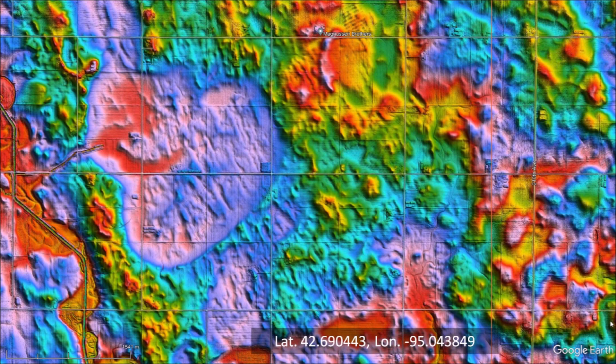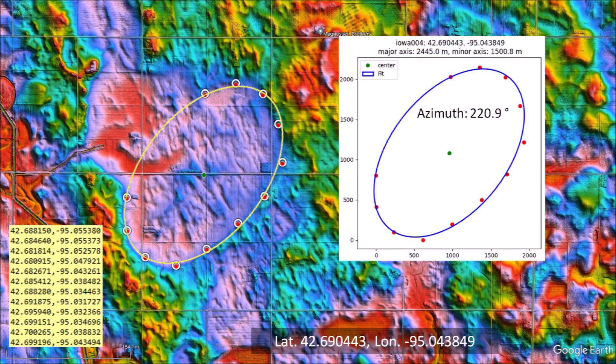Here is another example of highly eroded overlapping basins in Iowa. The northwest margin of the large basin has been obliterated due to the overlap. The best-fitting ellipse shows that 3 of the 12 points selected are not exactly on the path of the ellipse. This is to be expected when the boundaries of a basin are distorted or not clearly defined. This basin has a length of 2,445 meters, or 1.5 miles, and a width of 1,500 meters. The azimuth of 220.9 degrees leads to Lake Superior.